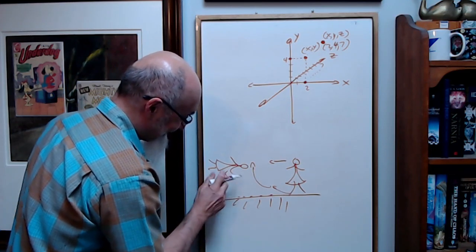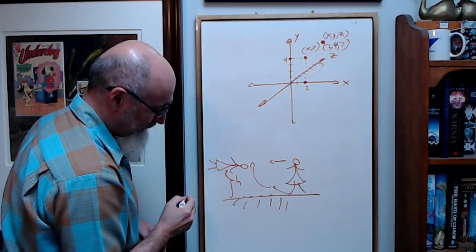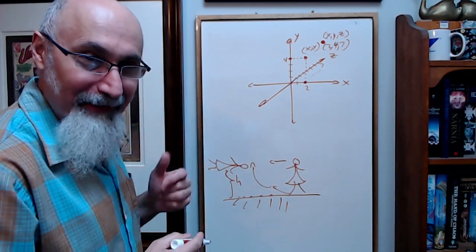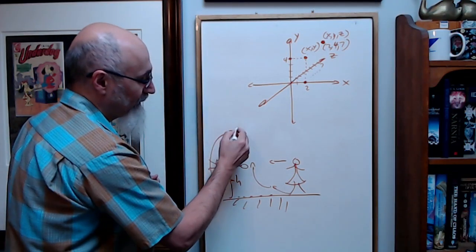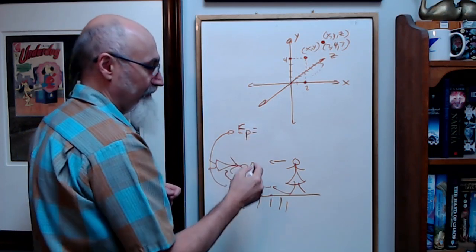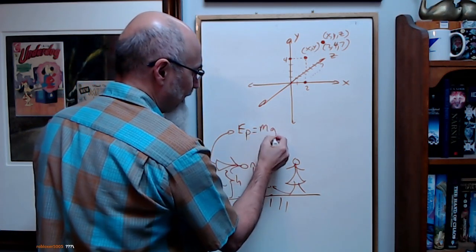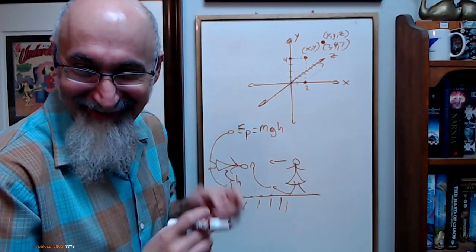That's her height, right? Now, potential energy you would have to start off with. Potential energy would be MGH. MGH, right? I'm pretty sure it's MGH, right? First time chat.